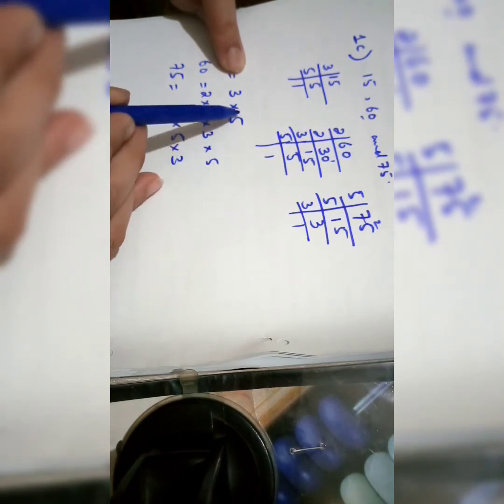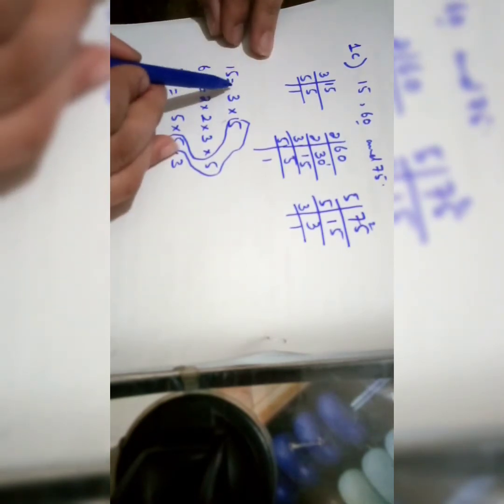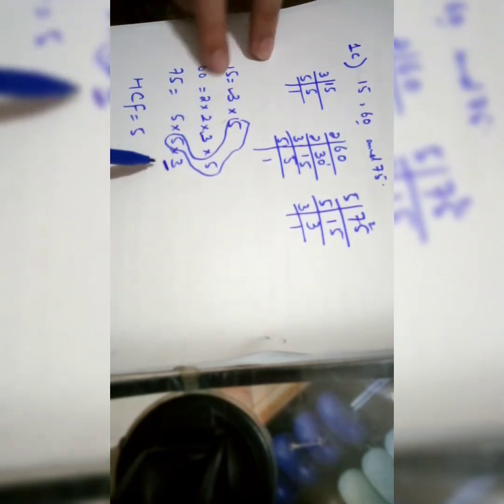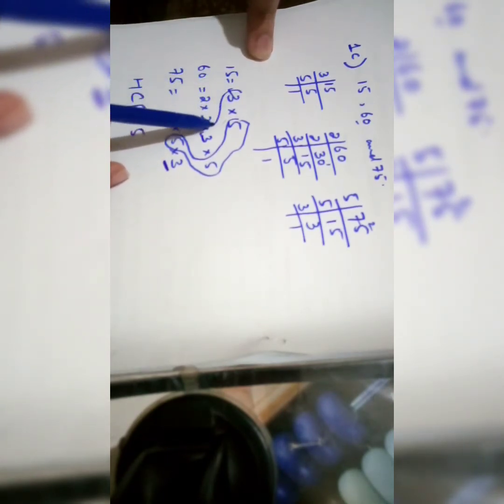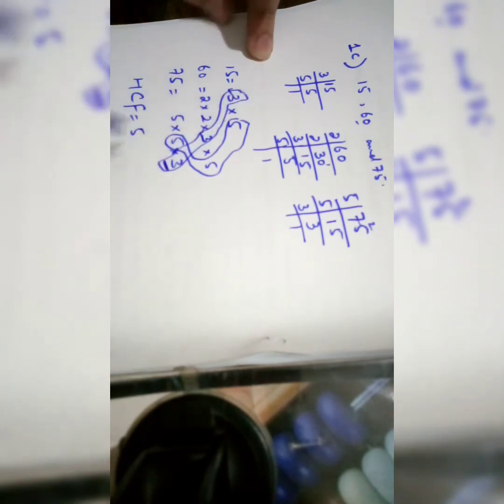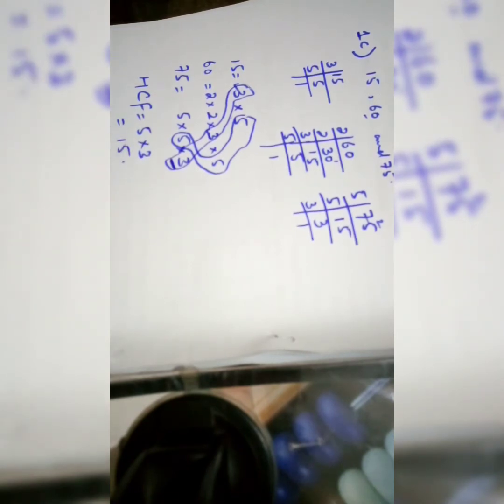Now take the common factors. Looking at all three terms, the first common factor is 5 — it appears in 15, 60, and 75. Then 3 is also common to all three terms. We have only these two common factors: 5 and 3. So the HCF equals 5 times 3, which is 15. That is the answer from the listing method.